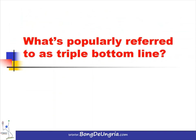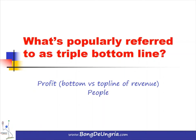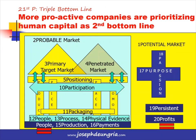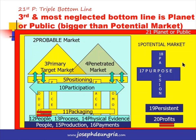What's popularly referred to as the triple bottom line has three components: the first is Profit — the bottom line versus the top line which is revenue; the second is People; and the third bottom line is Planet or Public, even if they may seem uninterested in the company's products or services. More proactive companies are prioritizing human capital as the second bottom line, and the third and most expansive bottom line is Planet or Public — even greater than the potential market.